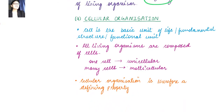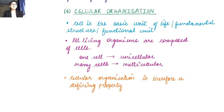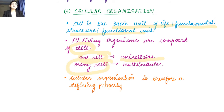Then we come to cellular organization. A cell is the basic unit of life — it is the fundamental structural unit. All living organisms are composed of cells, whether they be unicellular organisms with one cell or multicellular organisms with many cells. Therefore, cellular organization is a defining property — it will be present in all living things and not present in any non-living thing.